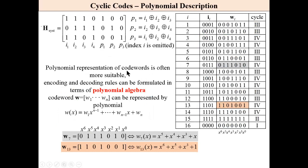Polynomial representation of codewords is often more suitable than description by means of a parity check matrix. Encoding and decoding rules can be then formulated by polynomial algebra. A codeword, this is a binary description, can be represented by the following polynomial.